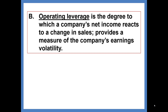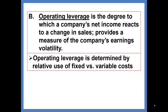Operating leverage is the degree to which a company's income reacts to changes in sales — it's looking at earnings volatility. How much does income react to a change in sales? If it reacts quickly, it would be called volatile earnings. Operating leverage is determined by the relative use of fixed and variable costs.